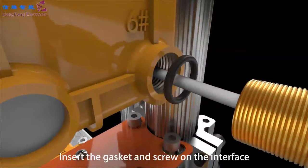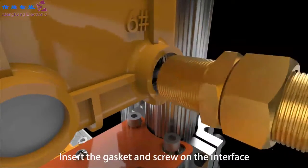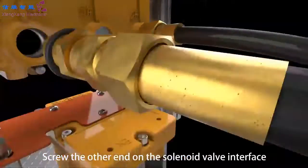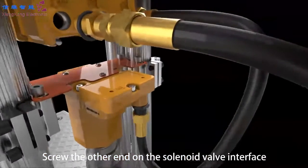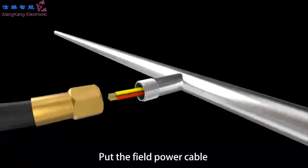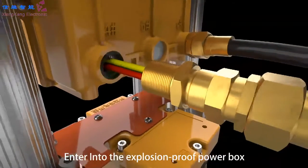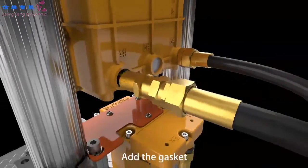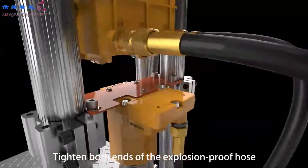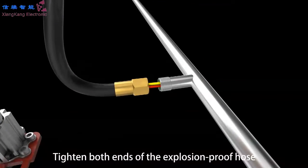Insert the gasket and screw on the interface. Screw the other end on the solenoid valve interface. Put the field power cable through the explosion-proof hose pipe G3/4, DN20, 25 millimeters. Enter into the explosion-proof power box. Add the gasket. Tighten both ends of the explosion-proof hose.